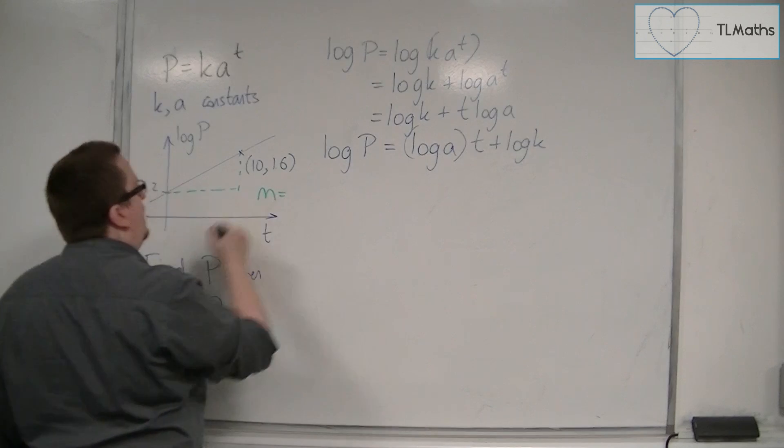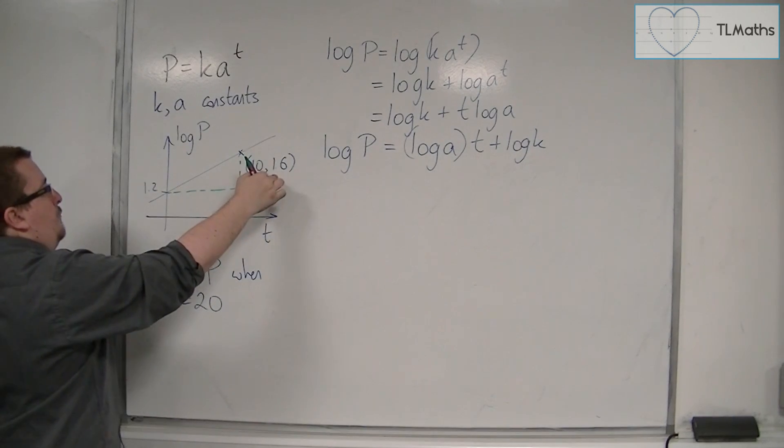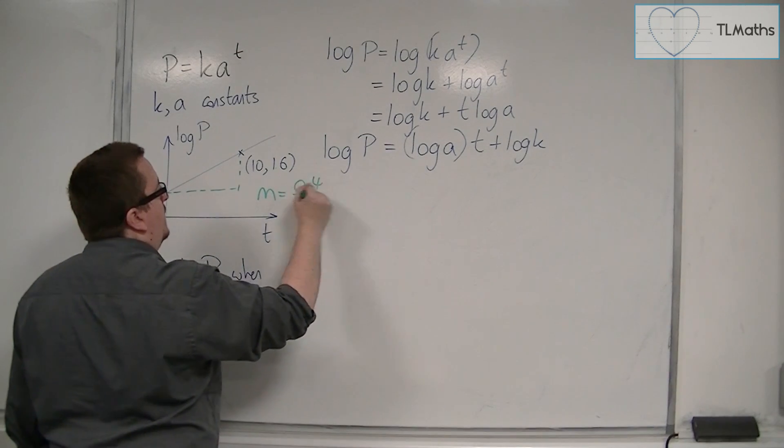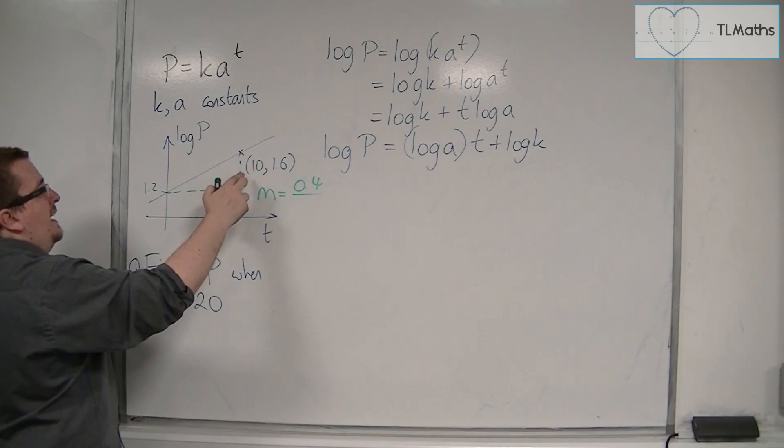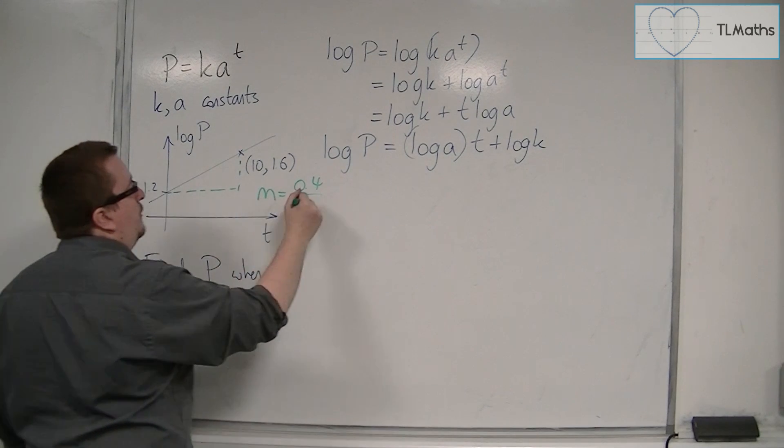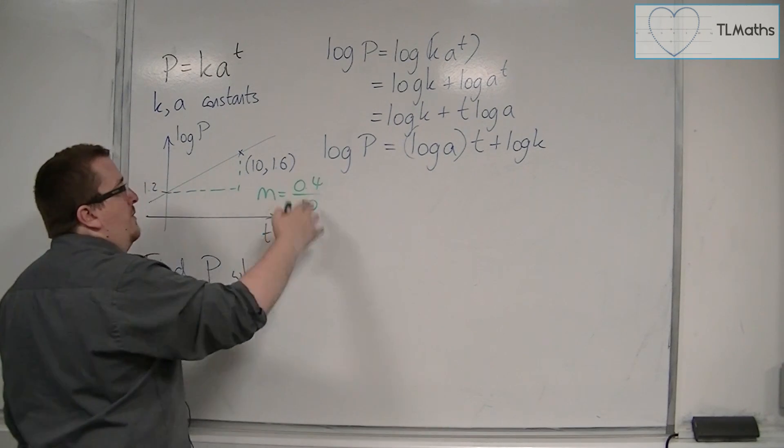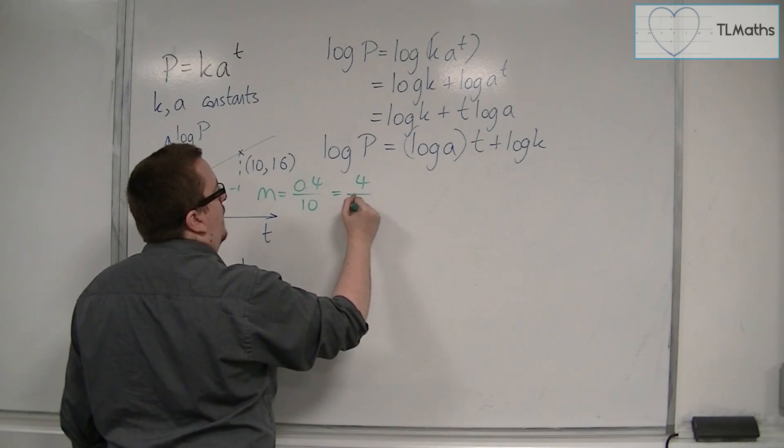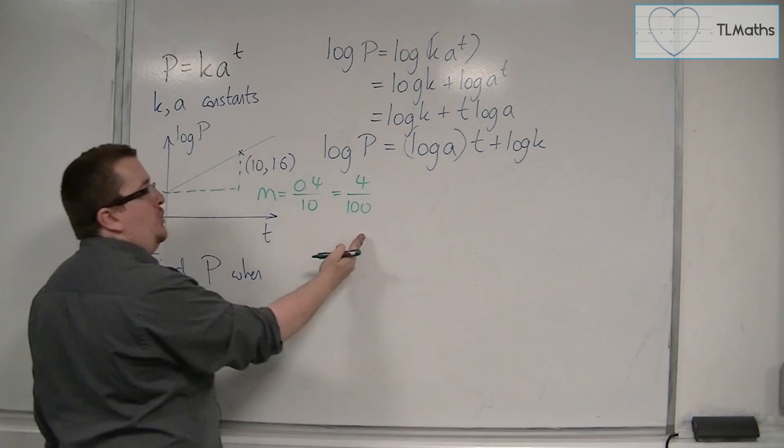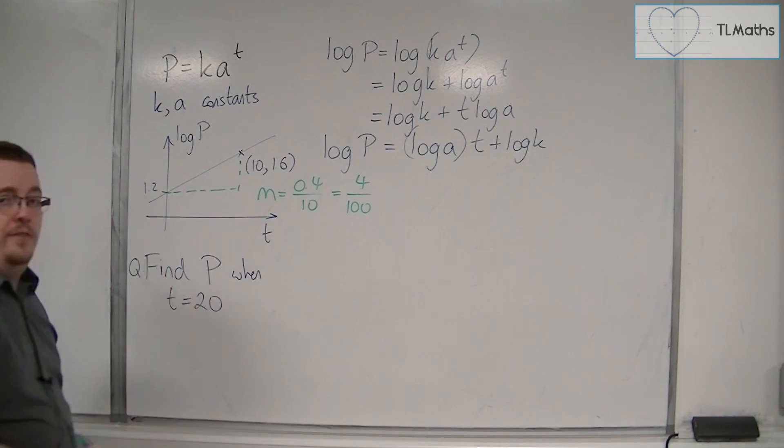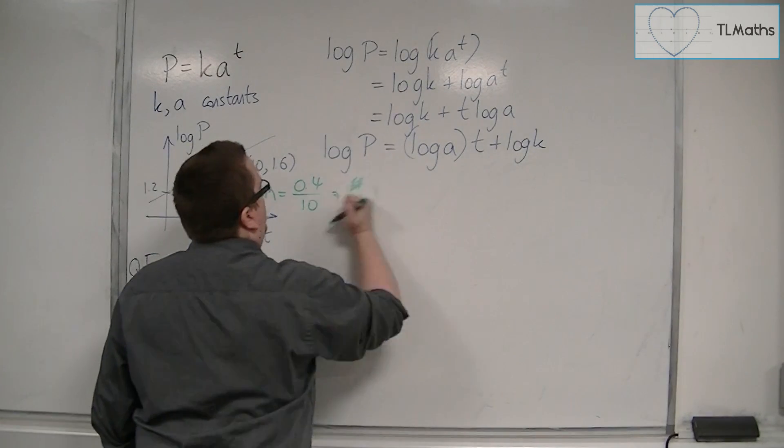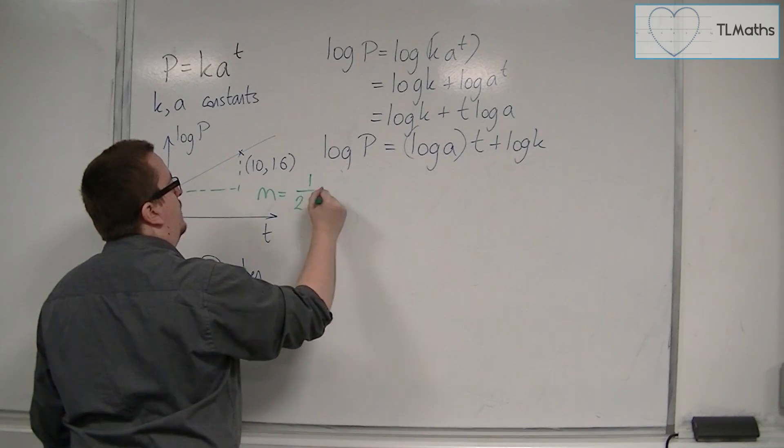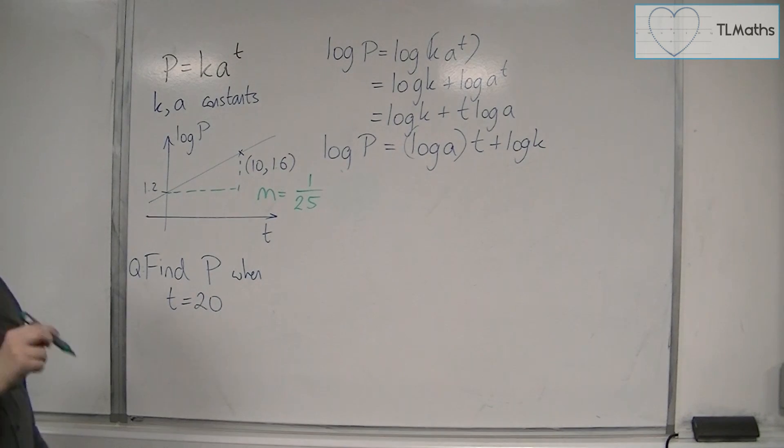So m, the gradient of this line, is the difference in the y-coordinate, so 1.6 take away 1.2, so 0.4, divided by the difference in the x-coordinate, so 10 take away 0, so just 10. So this, if I multiply top and bottom by 10, is 4 over 100, which is 2 over 50, which is 1 over 25. So m is 1 over 25. That is the gradient of this line.